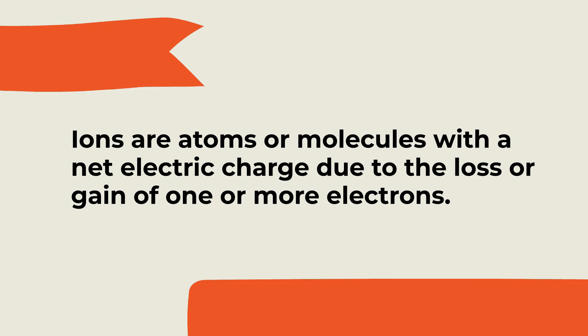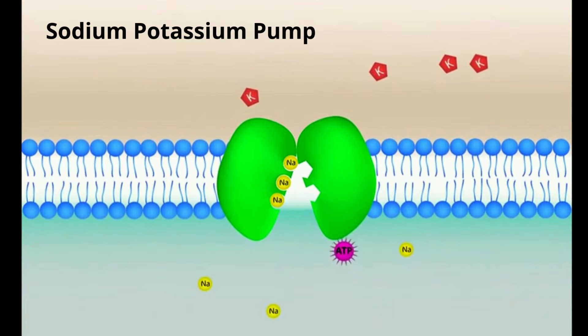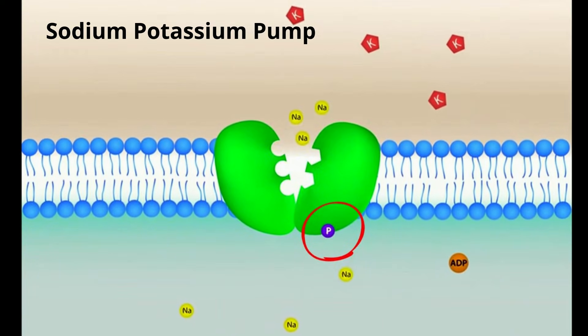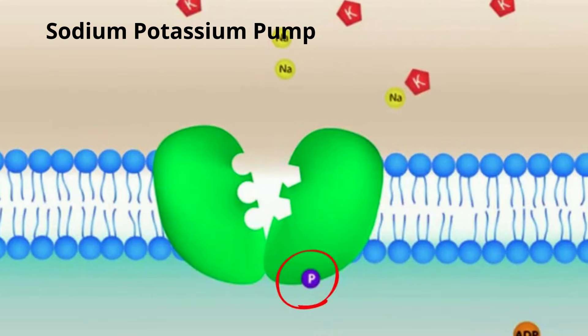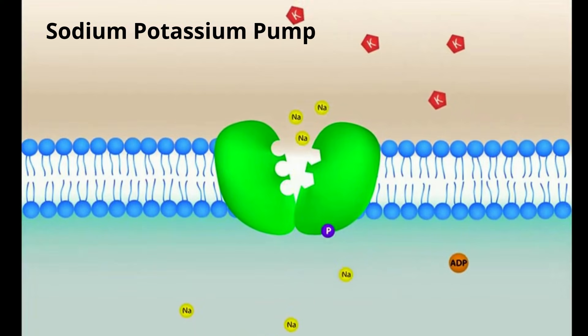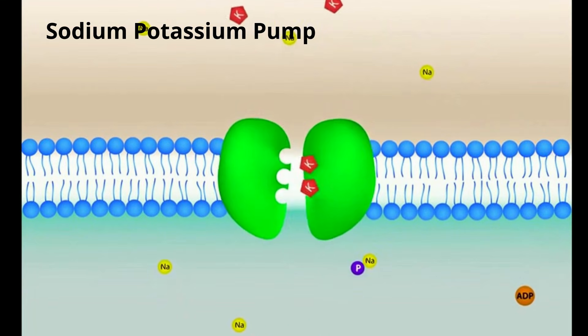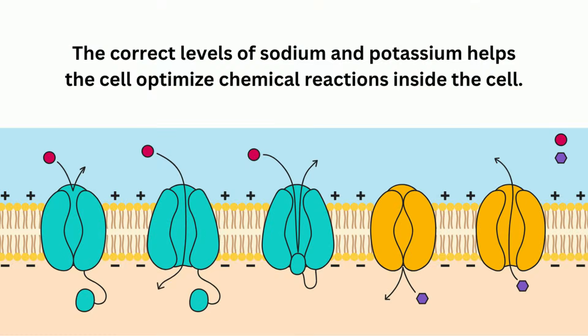The cell membrane also ensures optimal levels of ions. The cell does this by controlling the flow of ions into and out of the cell. For example, the cell maintains high concentrations of potassium ions inside the cell and a high concentration of sodium ions outside the cell. To maintain this concentration, the cell uses active transport, which requires energy, to pump sodium ions and potassium ions into and out of the cell.